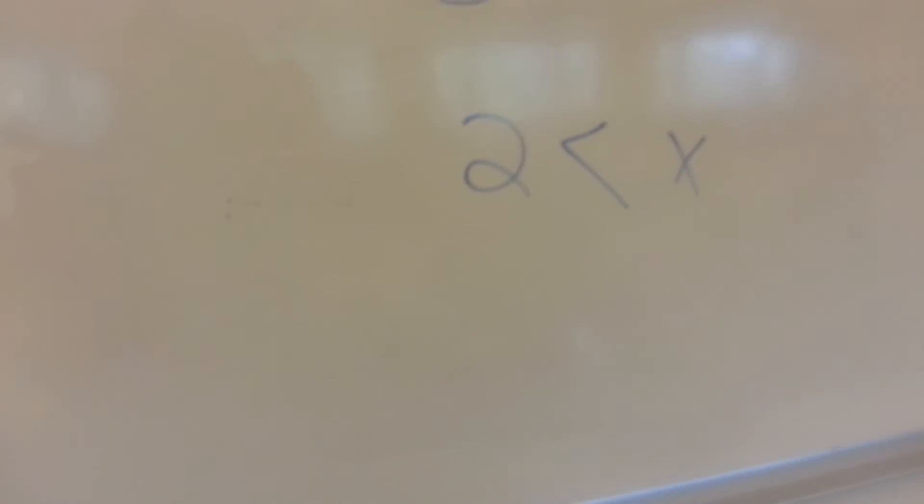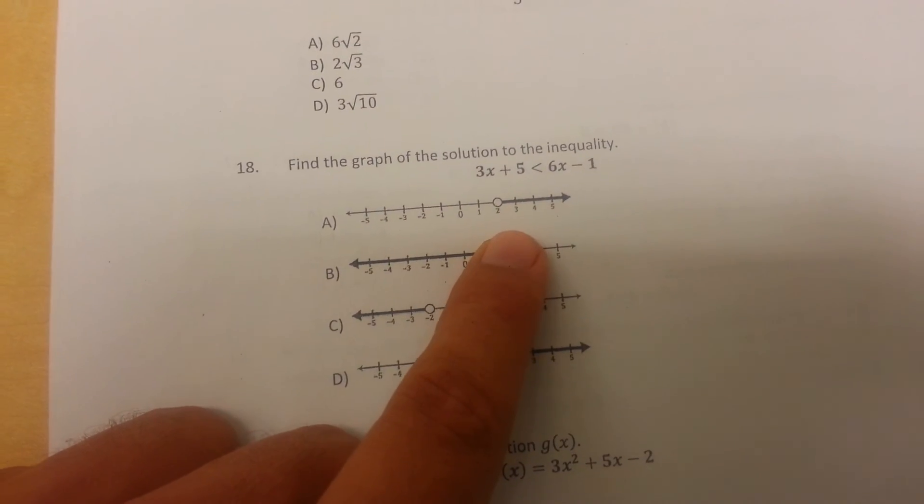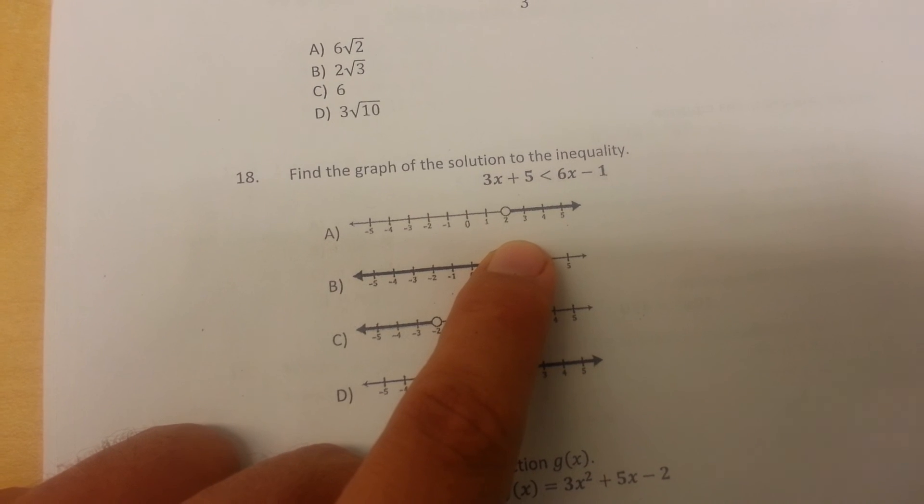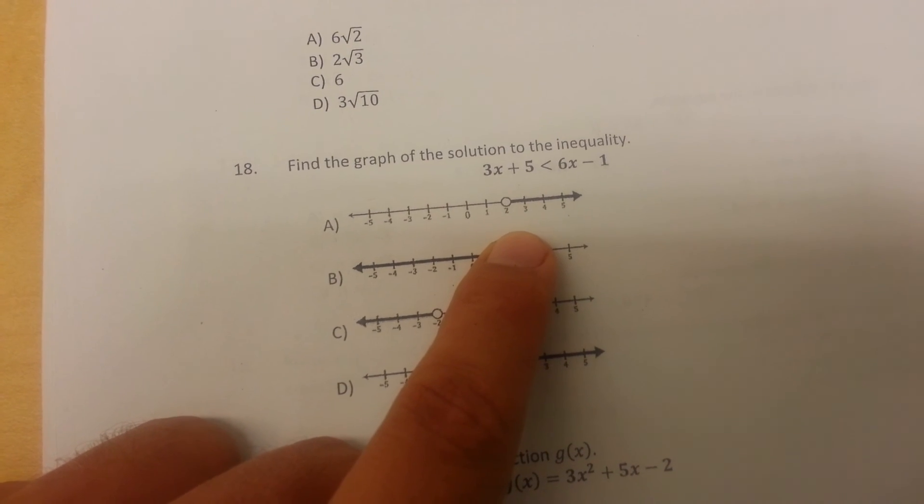Of course, we could take a look at our choices. X is greater than two. Here, X is greater than two. That's exactly what we have for choice A. So the answer for 18 in sample A would be A.